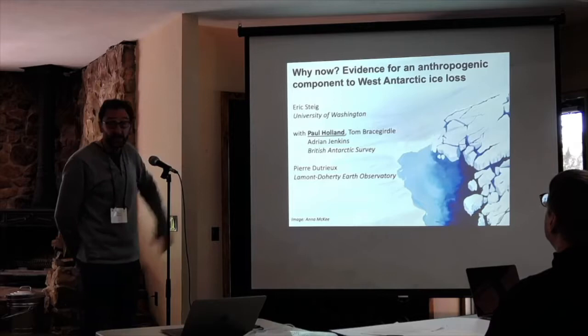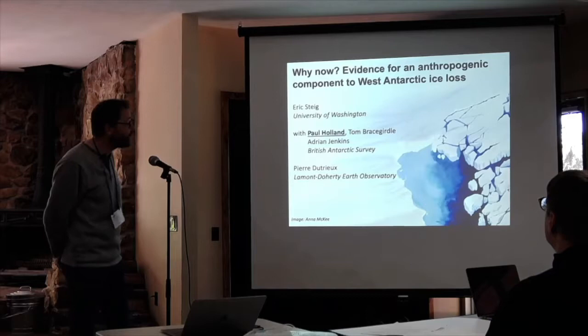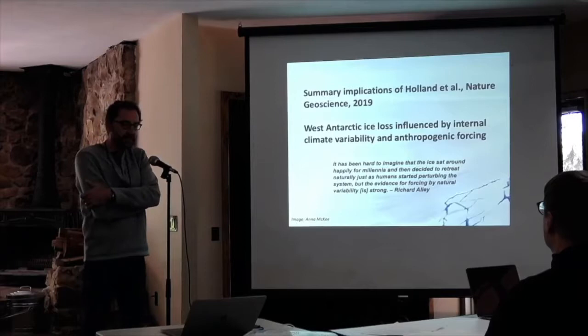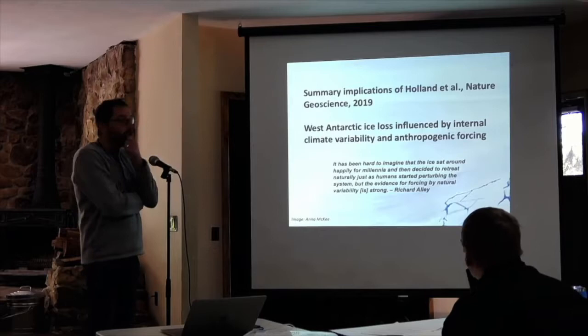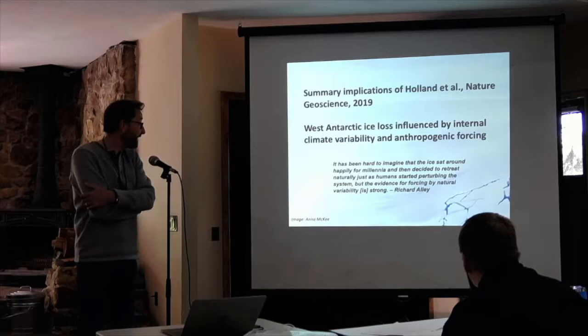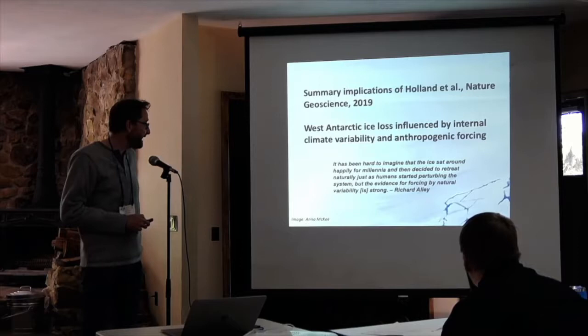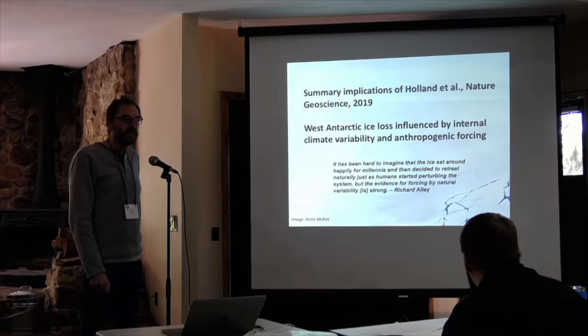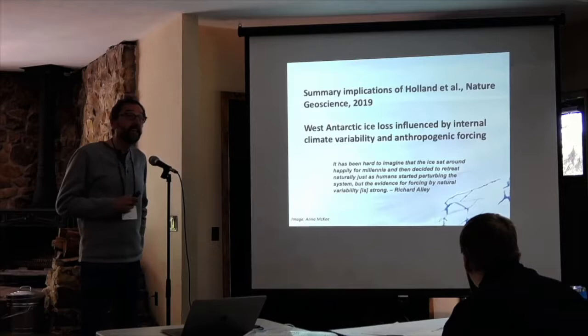Paul did most of the work, but we all contributed. What we are asking in this paper is — we know the ice sheet is in danger right now, perhaps it's actually collapsing, and it's very easy to say to reporters that this is connected to climate change meaning anthropogenic forcing. The evidence for this has been weak, well expressed in a quote from Richard Alley, who said it's been hard to imagine the ice just sat around and did nothing until we happened to be warming the climate, and then it decided to do something. We've always felt there must be an anthropogenic component, but the actual evidence is mostly non-existent, and we should be very careful about claiming it's been demonstrated.